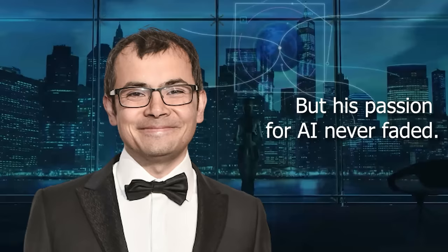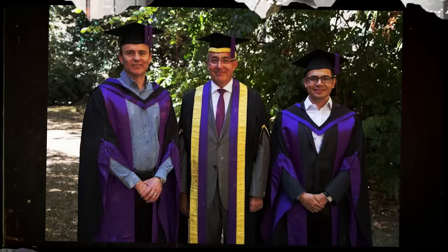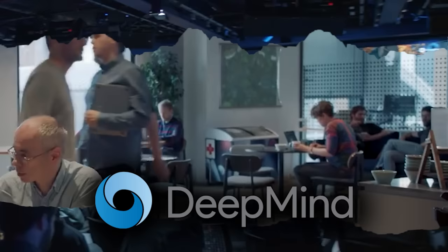He wanted to understand how the human brain works and how to create machines that can think like humans. So he went back to school and got a PhD in neuroscience from University College London. There he met Shane Legg, another AI researcher who shared his fascination with intelligence. Together they founded DeepMind in 2010 with Mustafa Suleiman, a progressive activist who was Hassabis' childhood friend. DeepMind is an AI research lab that aims to create Artificial General Intelligence, or AGI.